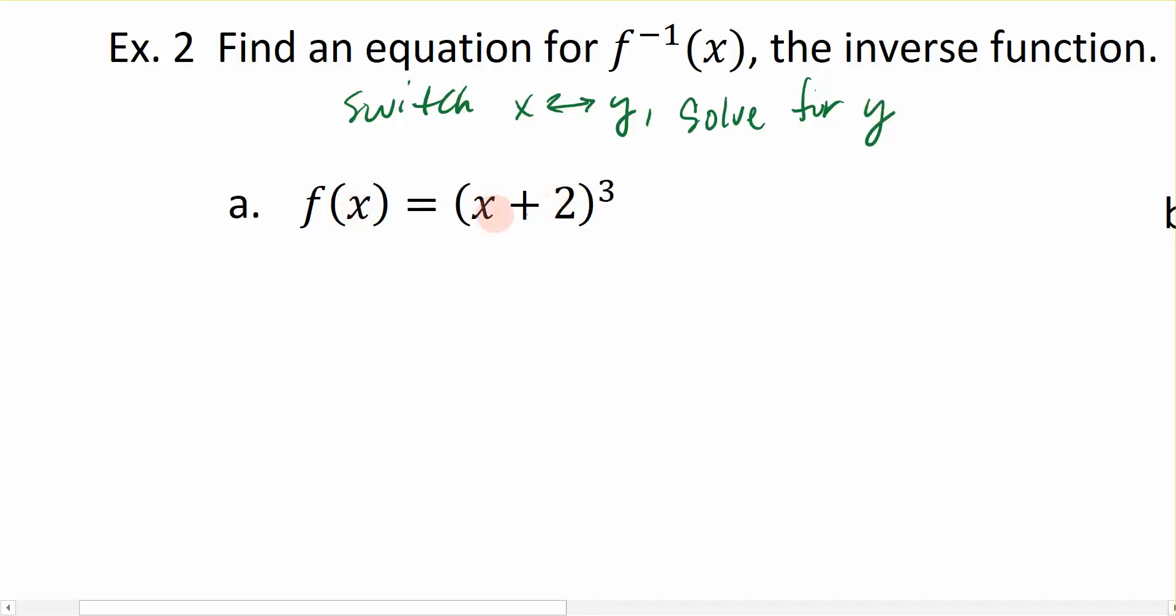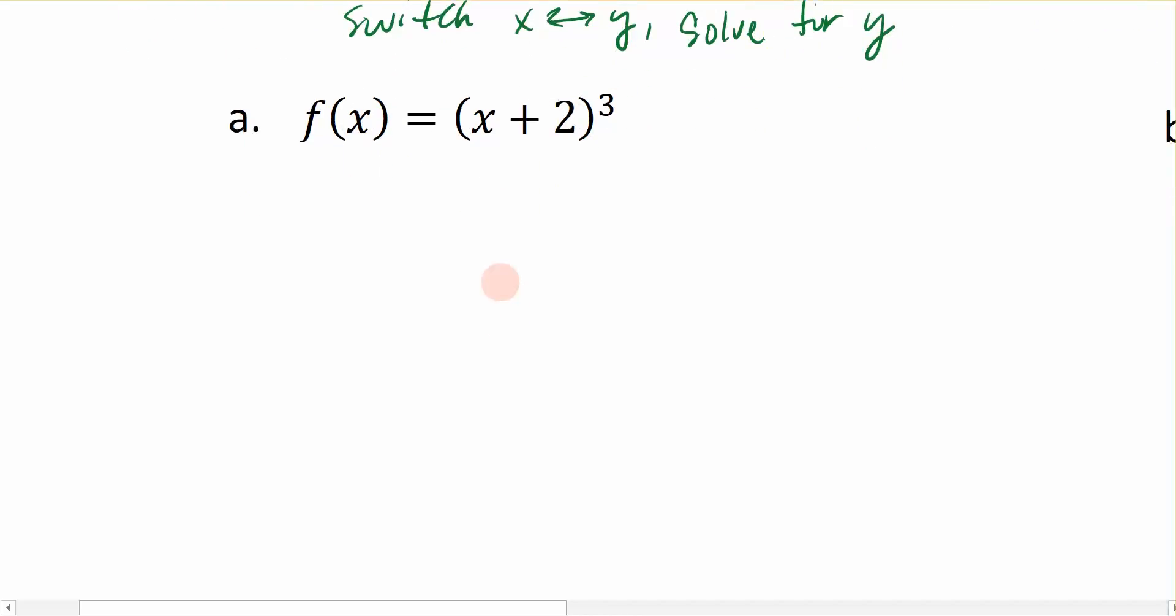And we will do that in this first equation right here. So before I ever switch anything, let's rewrite this from function notation to just y equals x plus 2 to the third power. Now we can switch the x's and the y's in my equation and solve for y. So x is equal to y plus 2 raised to the third power.